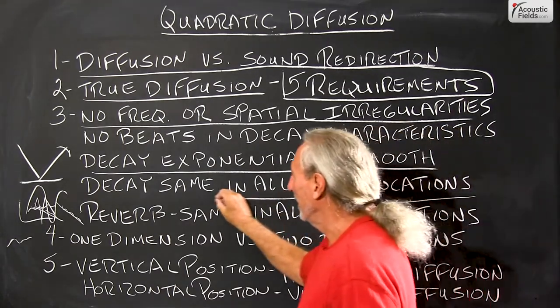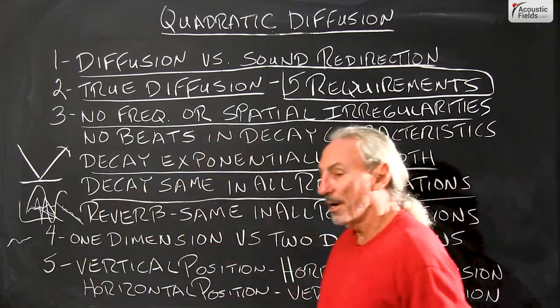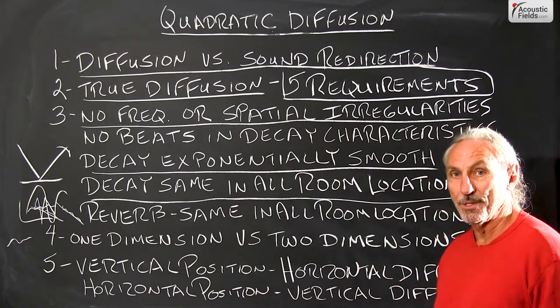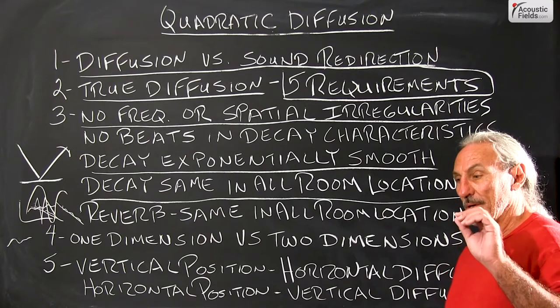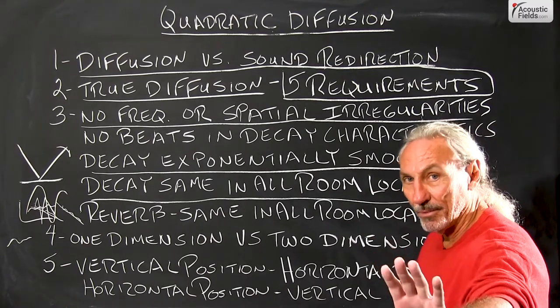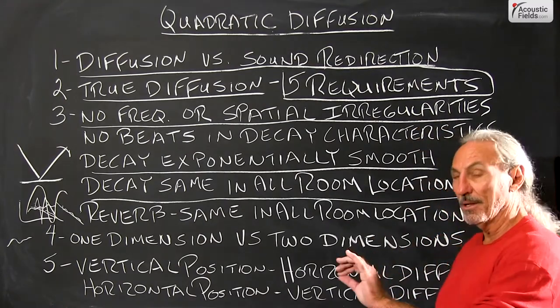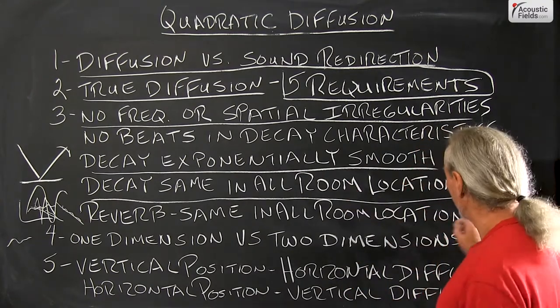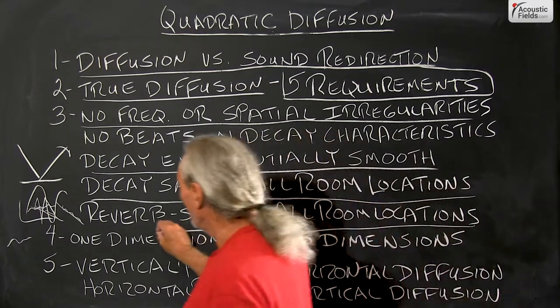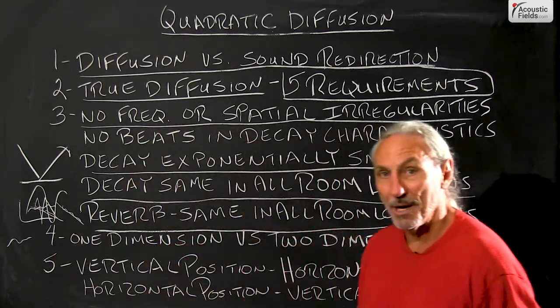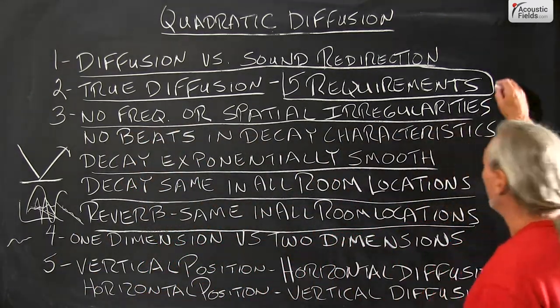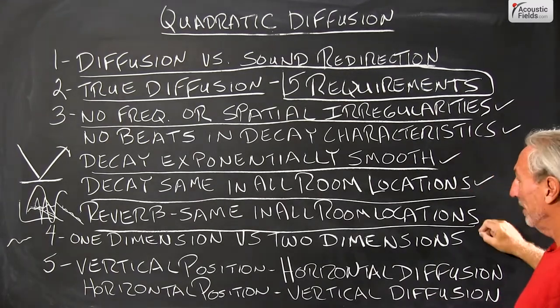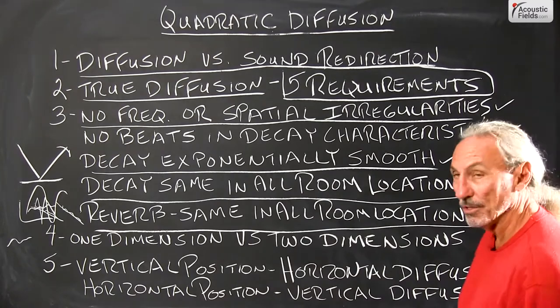And here's a very critical one. And this is why I always harp on where to put treatment. The decay must be the same in all room positions. So we can't have one part of the room with a decay rate and level x and another part x2. So we have to have it the same in all places. Here's another thing people overlook: reverb must be the same in all locations.